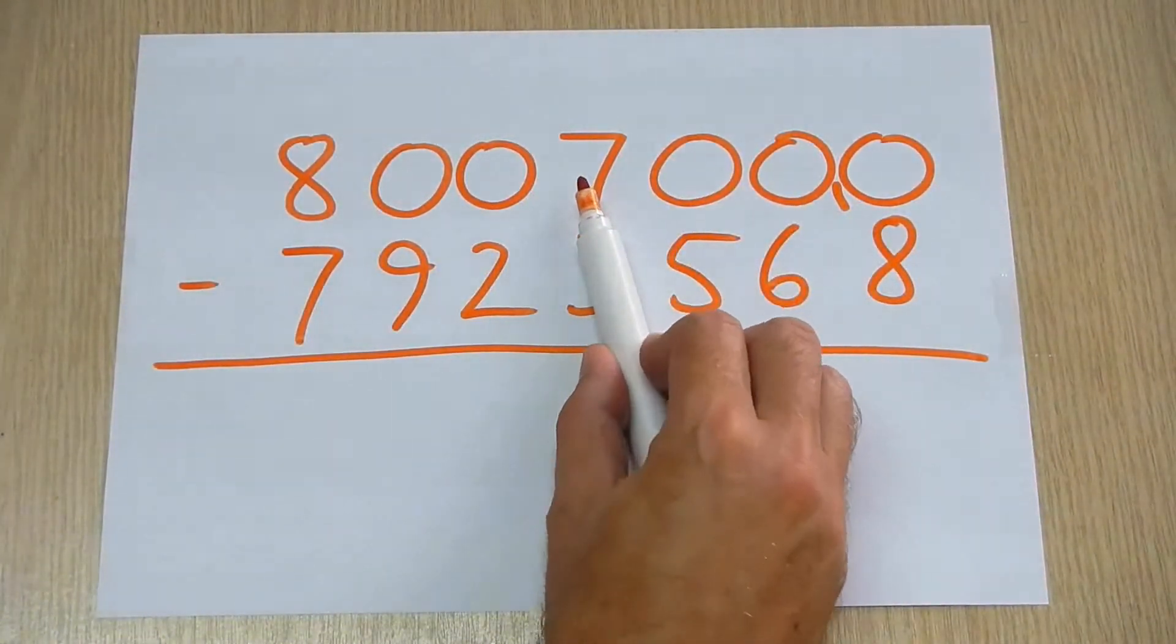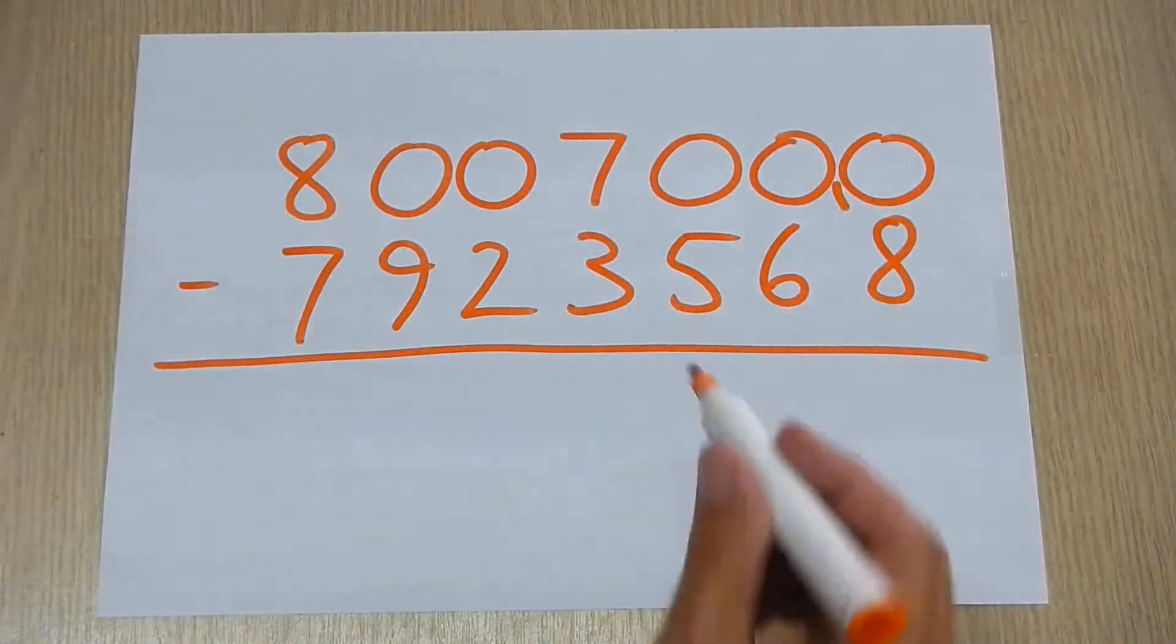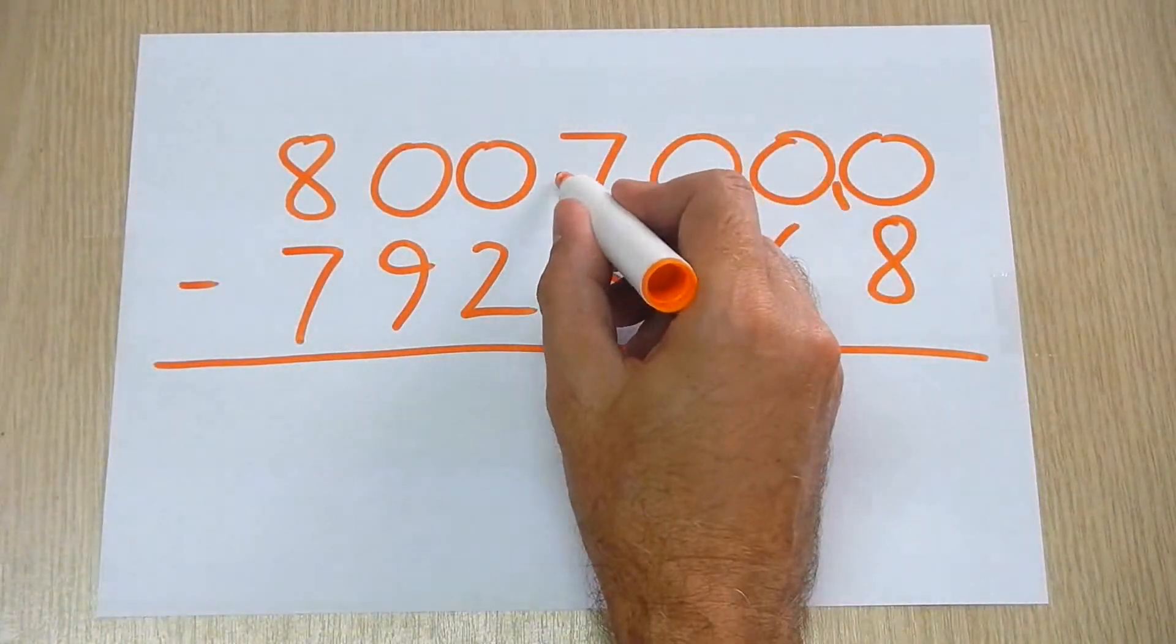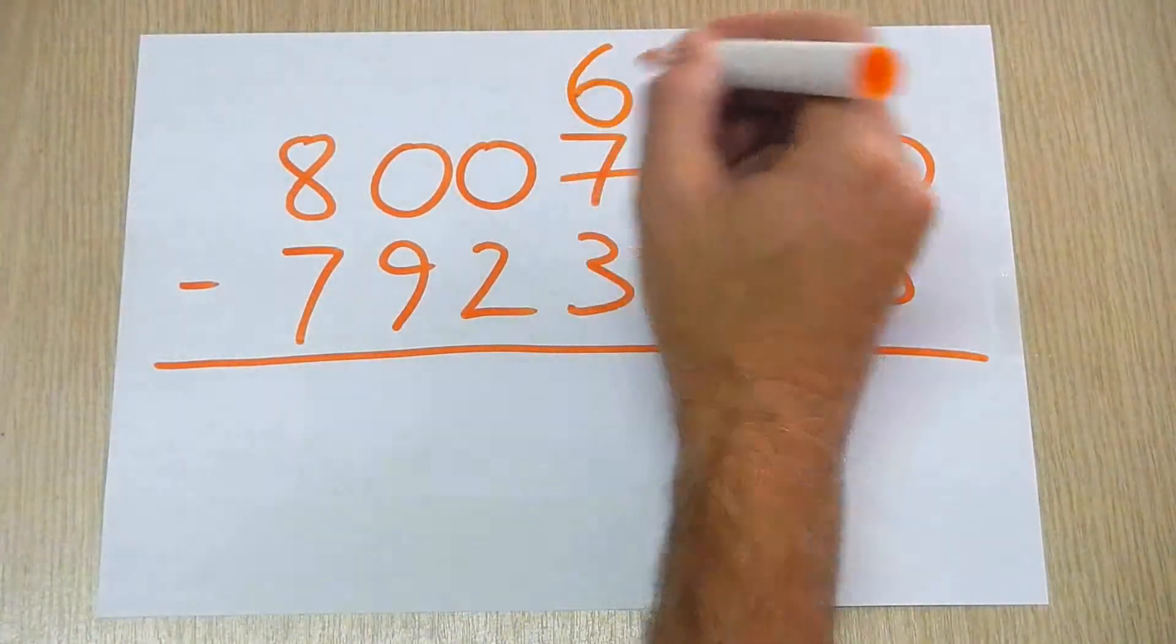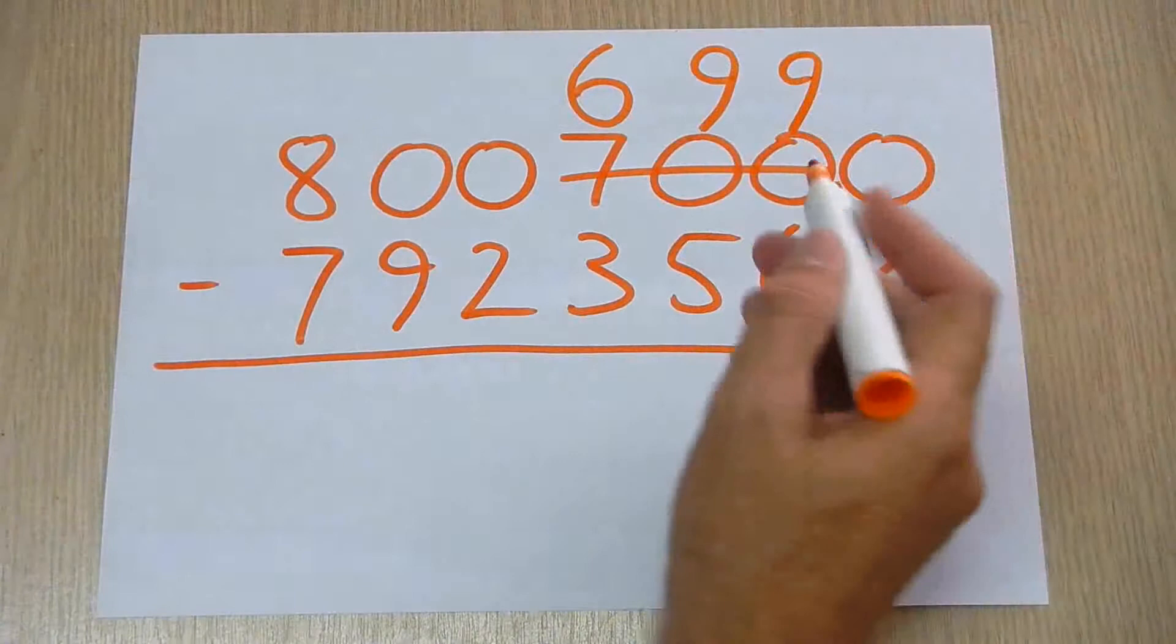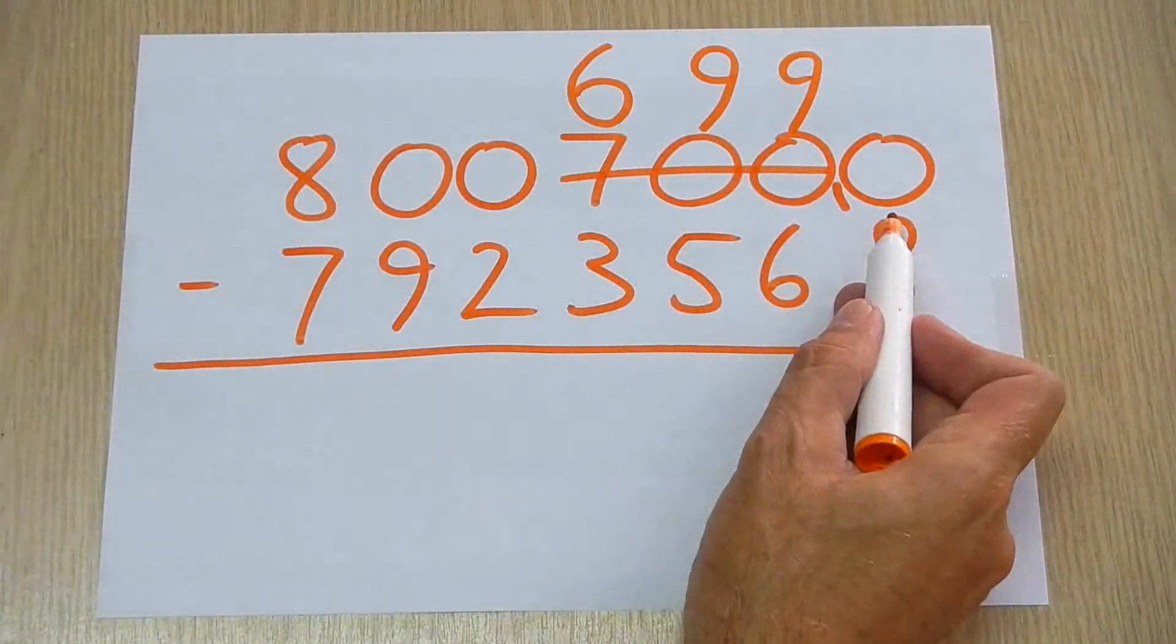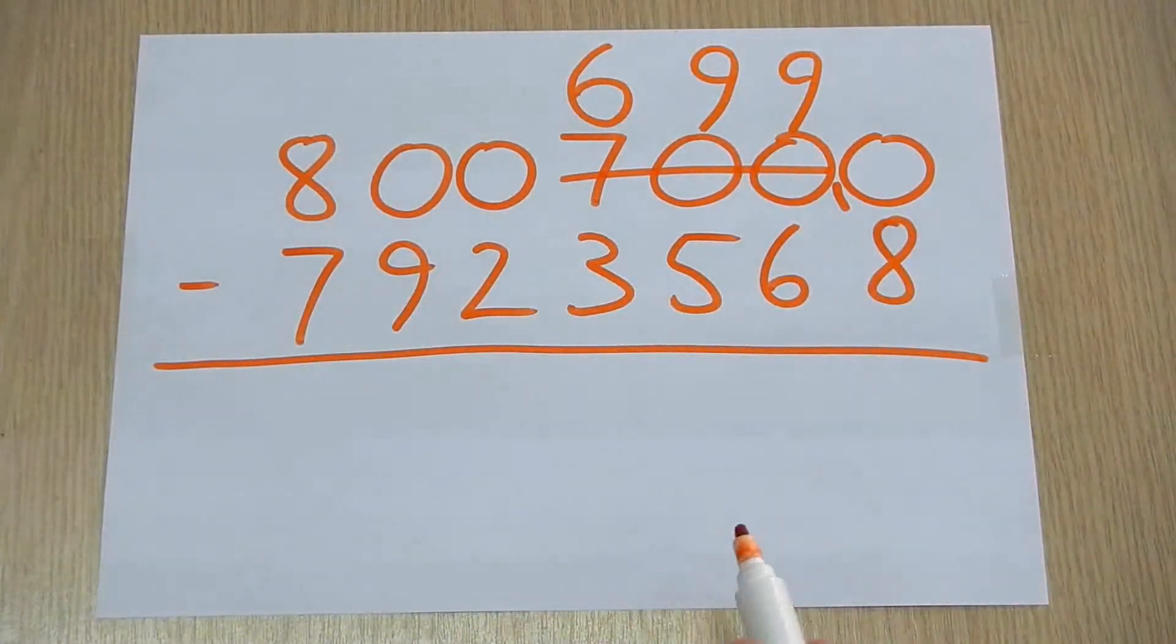Now straight away, we can knock out that 700 tens there and turn it into 699 tens. Now we've already used one 10 there, so we can start doing our subtraction, can't we?